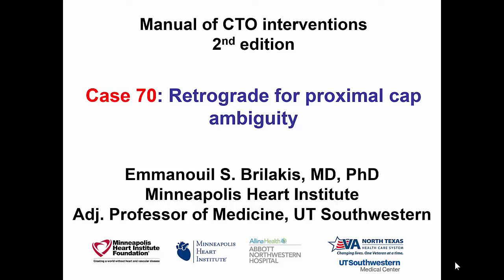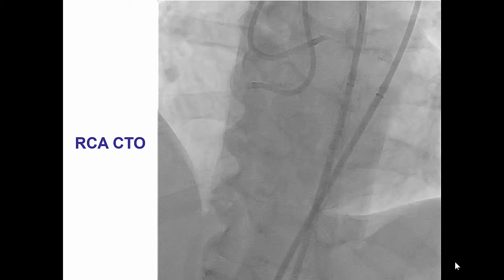Hi, this is Manos Brilakis from the Minneapolis Heart Institute, presenting case 70 for the second edition of the Manual of CTO Interventions. This is a case in which the retrograde approach was used to resolve proximal cap ambiguity.